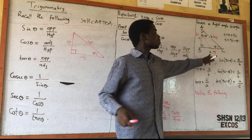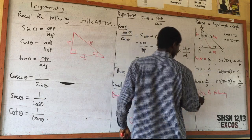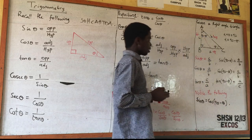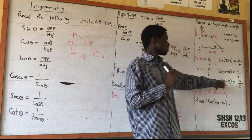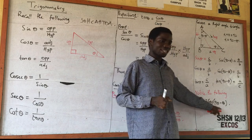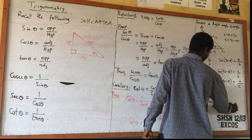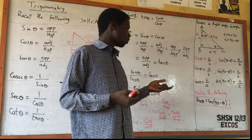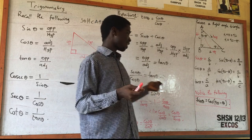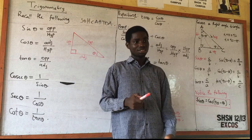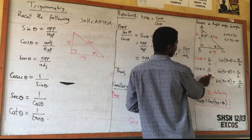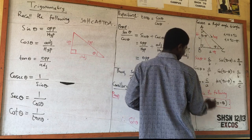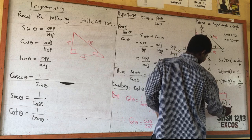So we notice that sine theta equals cos (90 minus theta). For example, if you check sine 30, you will see 0.5, and if you check cos 60 you will also get 0.5. This is a key identity that will be useful. Sine theta is equal to cos (90 minus theta), and cos theta is equal to sine (90 minus theta) — both are important identities.